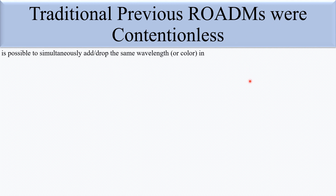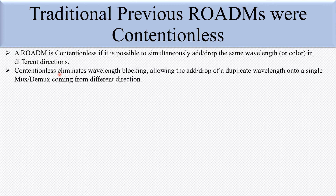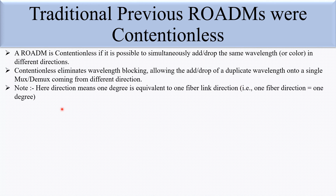Let's see how a ROADM is contentionless. If it is possible to simultaneously add or drop the same wavelength or color in different directions — suppose we have a mux/dmux system in which we can drop the same wavelength, but those two wavelengths must be coming from different directions — that is contentionless. Contentionless eliminates the wavelength blocking, allowing the add/drop of a duplicate wavelength onto a single mux/dmux coming from different directions. You can add or drop the same lambda on the same CMD, but both instances of that same lambda must be coming from different directions.